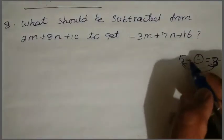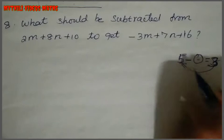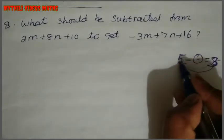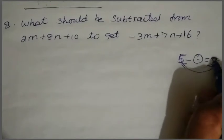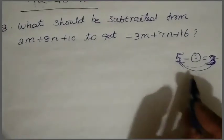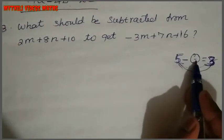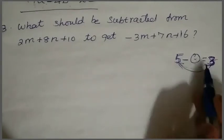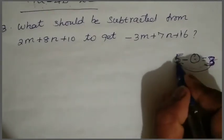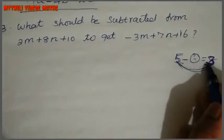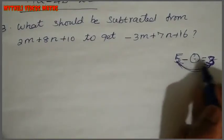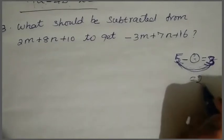For example, suppose we have a number of 5. What should be subtracted from 3? So if you have a number of 5, what should be subtracted from 3? We will subtract the two numbers: 5 minus 3 equals 2.